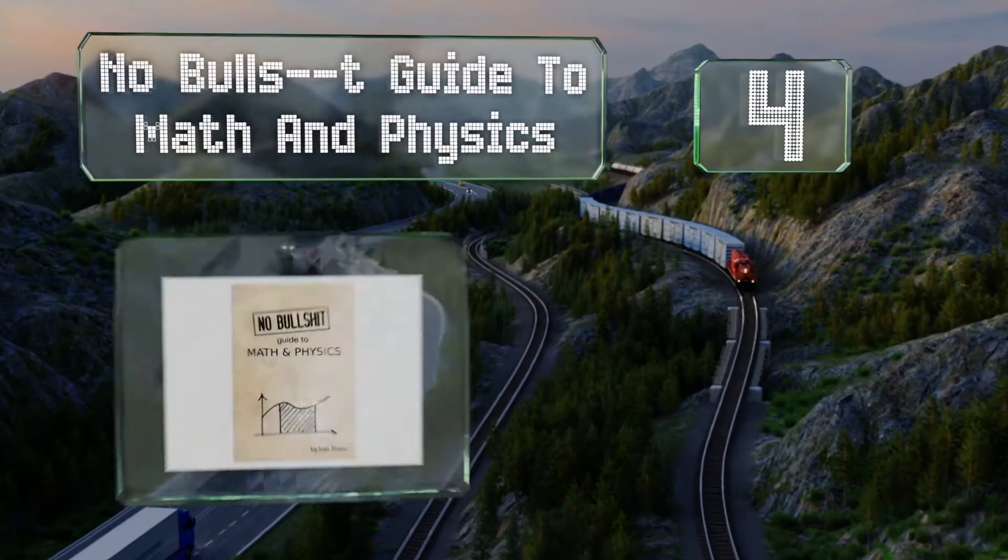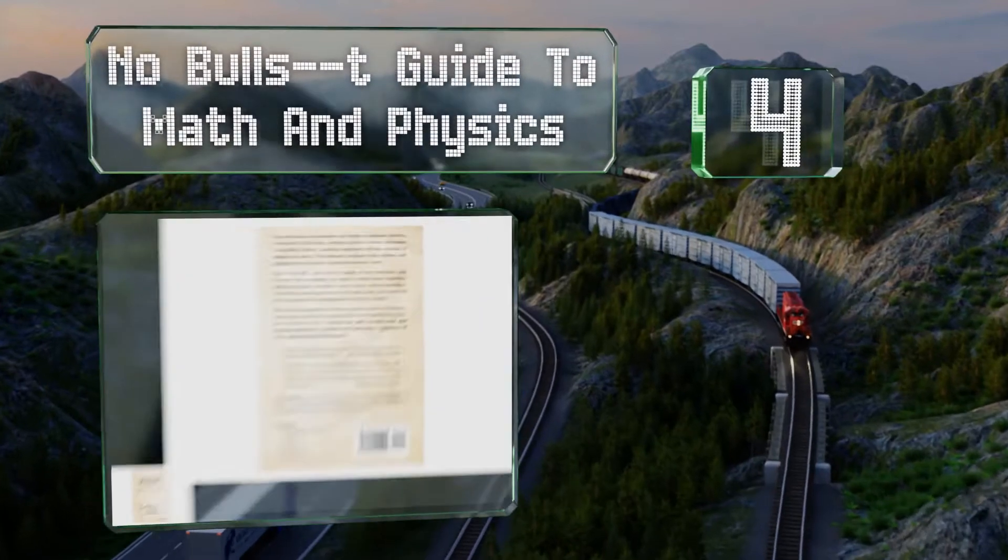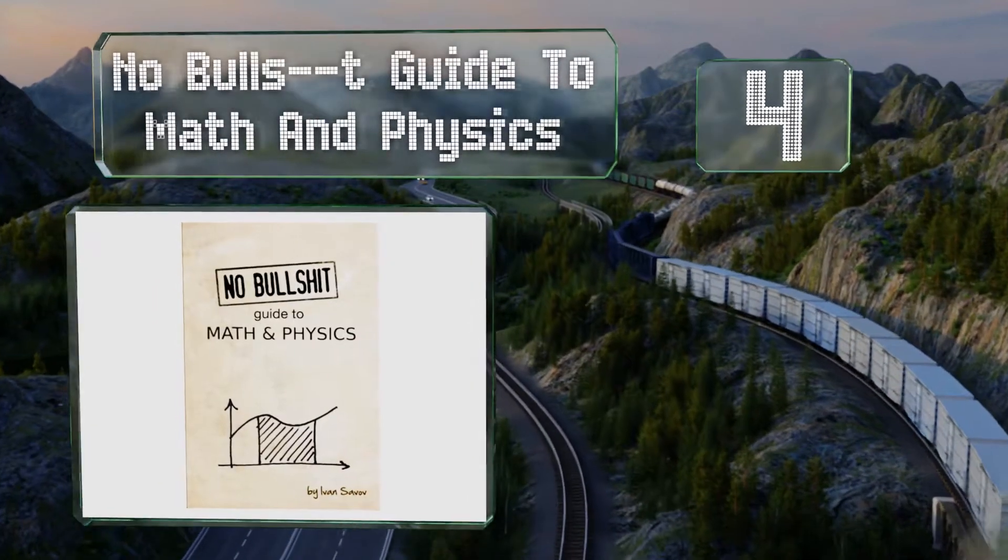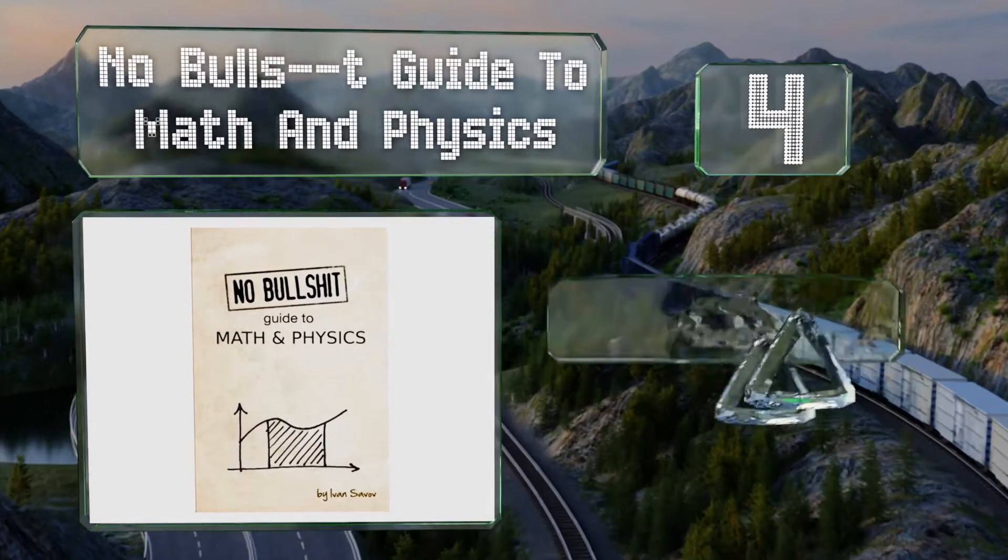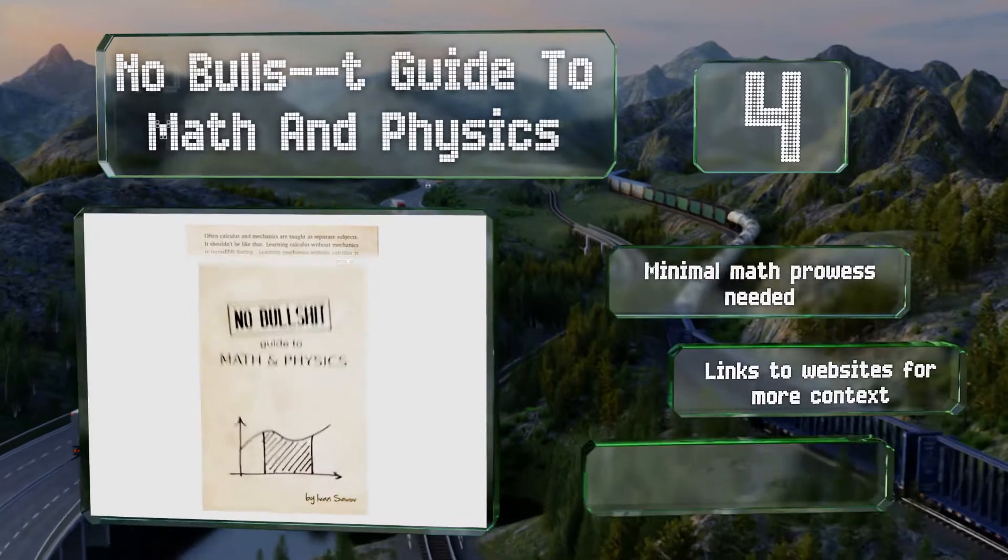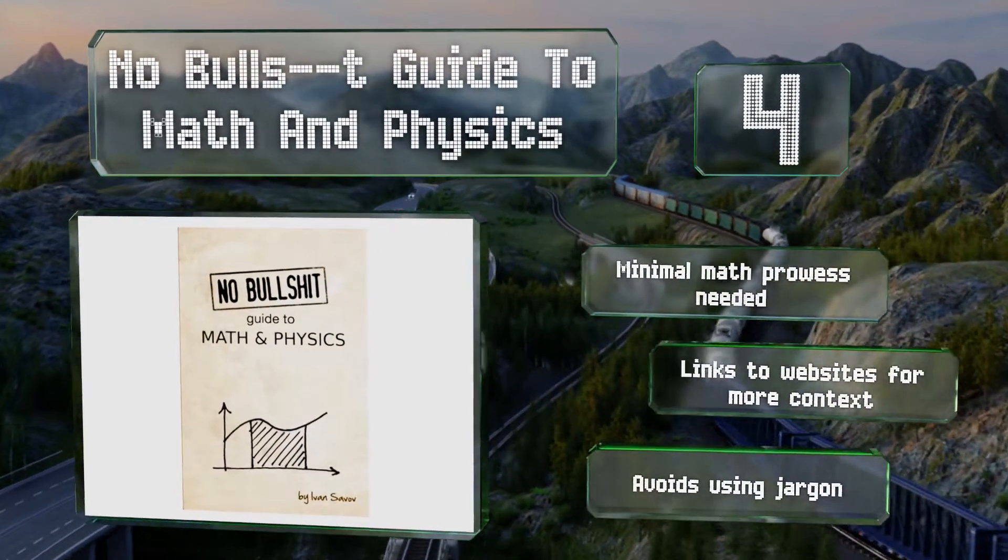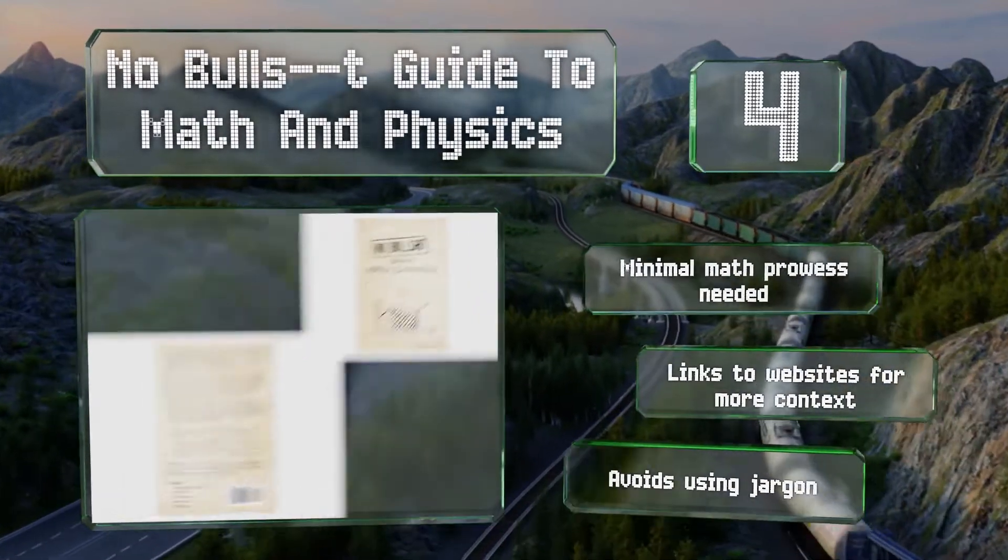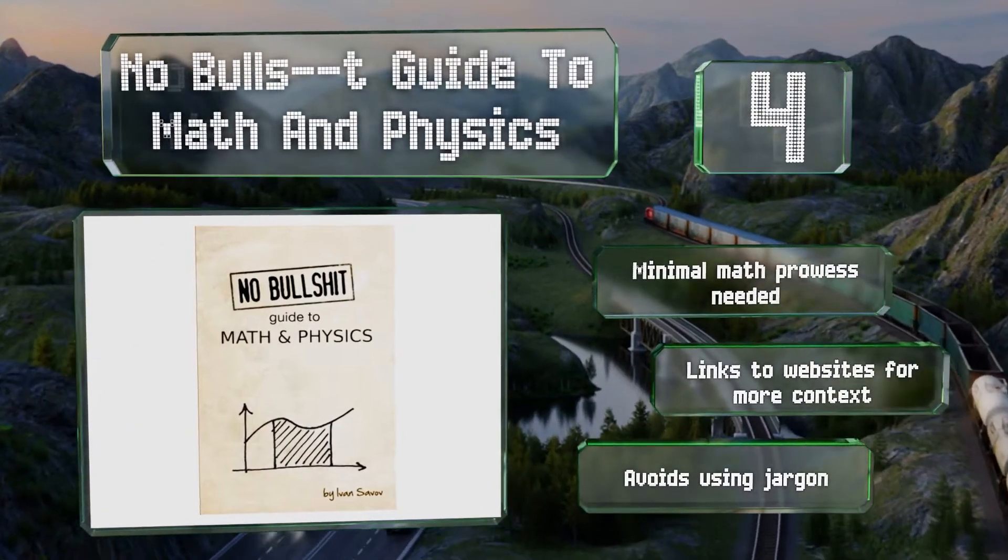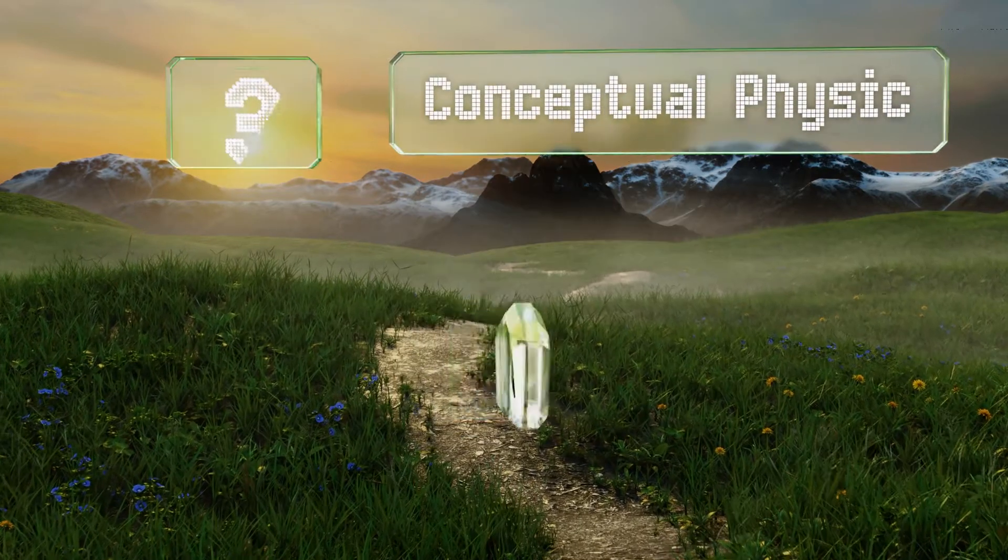At number 4, as the playful name would suggest, the Noble Guide to Math and Physics takes a light-hearted approach to a serious subject, the very manner in which matter and energy relate and function. It makes for suitable summer reading before the semester begins. Minimal math prowess is needed and it avoids using jargon. There are links to websites for more context.